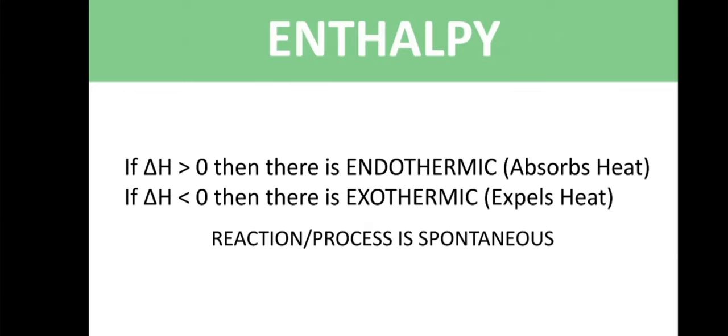Measuring the change in enthalpy allows us to determine whether a reaction was endothermic — absorbing heat, positive change in enthalpy — or exothermic — releasing heat, negative change in enthalpy. It is used to calculate the heat of reaction of a chemical process. Change in enthalpy is used to measure heat flow in calorimetry, to evaluate a throttling process or Joule-Thompson expansion, and to calculate the minimum power of a compressor. Enthalpy change also occurs during a change in the state of matter.